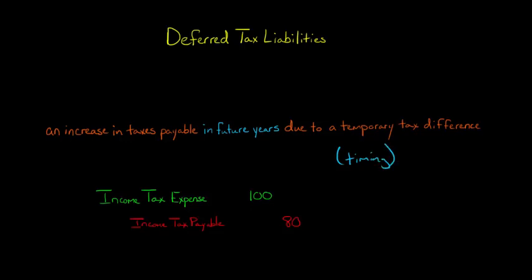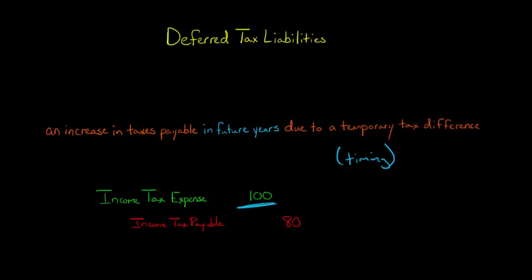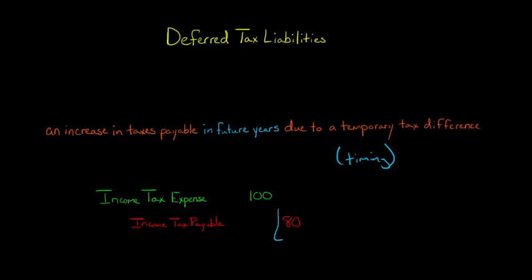For example, between book and tax income, maybe the depreciation is accelerated, so you get the deductions faster with tax. Let's say that in your current period, your income tax expense is $100, but your income tax payable — the amount you're actually paying — is only $80. We need a plug to make our debits and credits balance, and that plug is the deferred tax liability of $20.